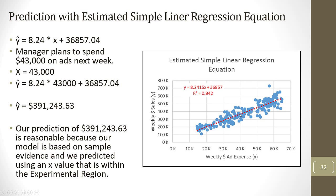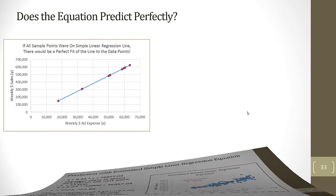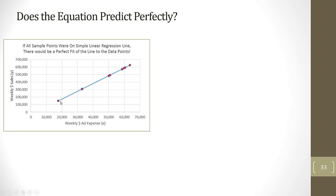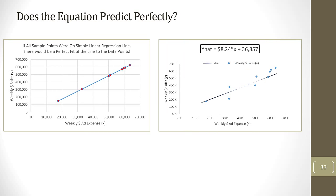Let's think about what it would mean if we had a perfect equation that predicted exactly like the original sample points. It would look like this: our line, and all of the original sample points would be exactly on the line. But that's not what we have. Here's our estimated regression line, and there's all of the original sample data points — they're not on the line.